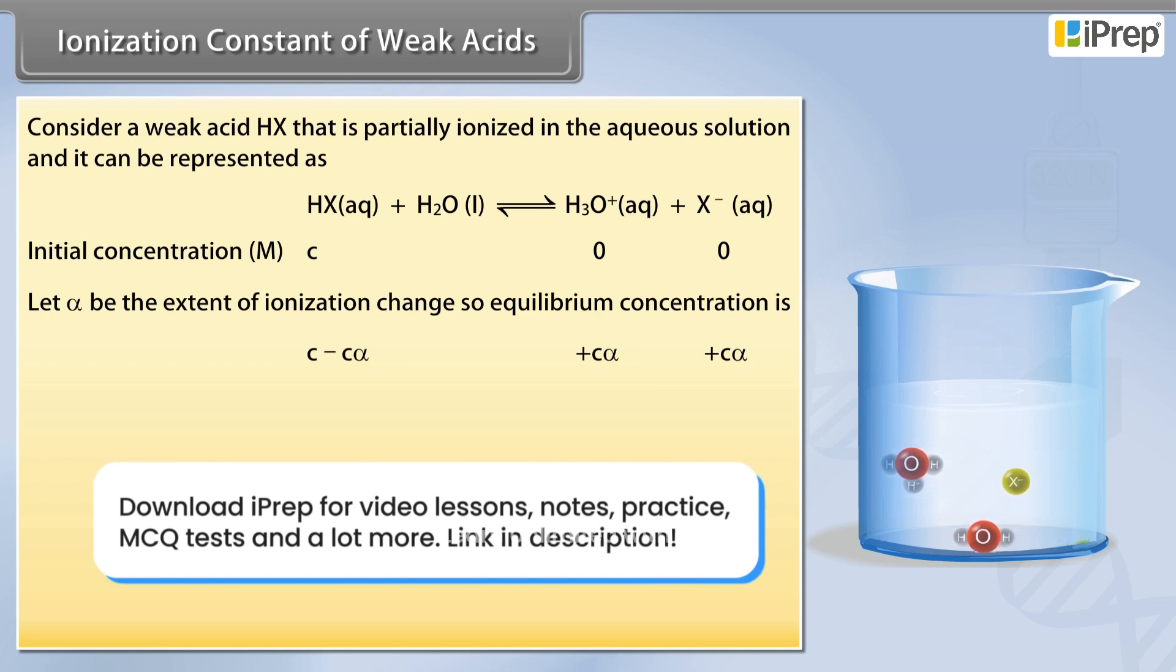H3O plus equilibrium concentration is plus C alpha, and X minus equilibrium concentration is plus C alpha.